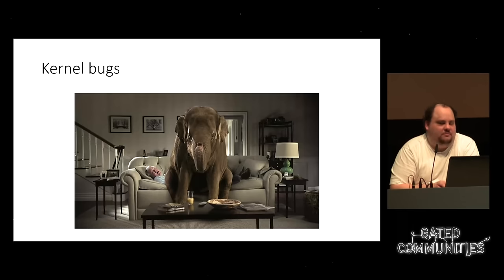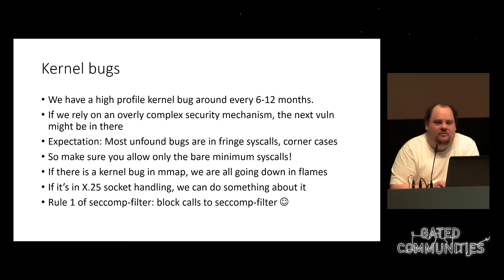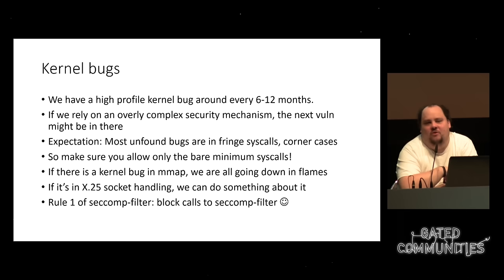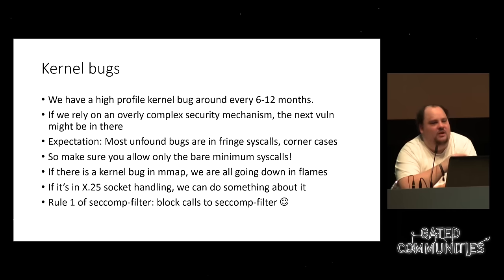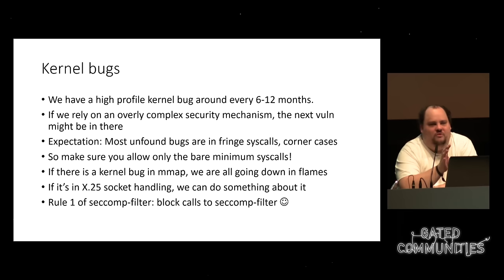The big elephant in the room is kernel bugs — we have a high-profile kernel bug around every 6 to 12 months. If we rely on security mechanisms like namespaces or SeccompFilter, the next vulnerability might be there. The expectation is most unfound bugs are in obscure places — like x25 socket handling, because nobody uses that anymore. If we lock that away, we gain something. So there's value not just in restricting permissions, but also in restricting kernel APIs visible to the program and locking away APIs that might have a problem in the future. That's insurance against the future.